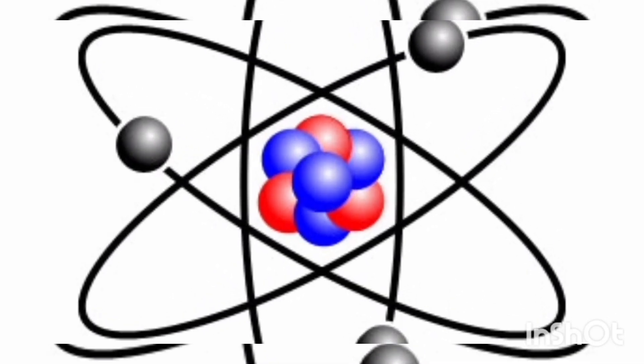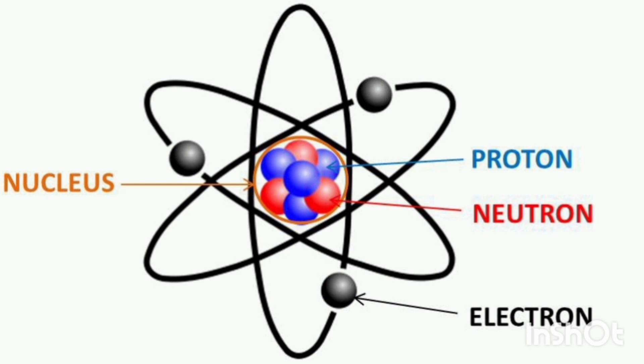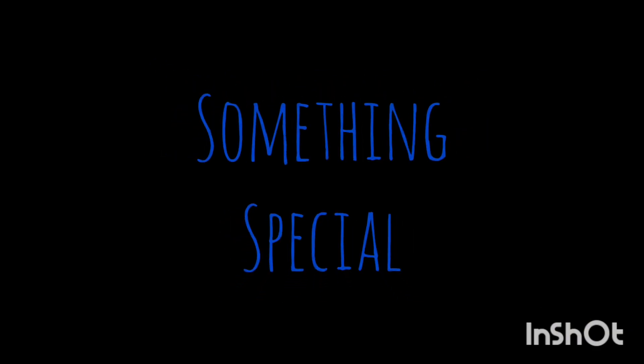Well, it comes down to what's inside their atoms. As you can see, atoms are made up of just three types of tiny particles: protons, electrons, and neutrons. And each of these tiny particles does something special.